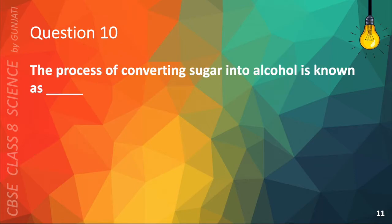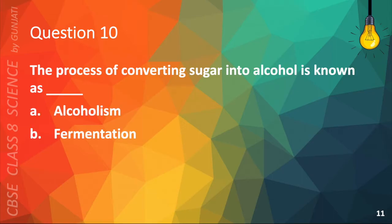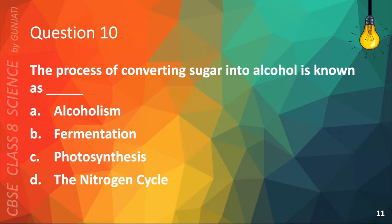Question 10. The process of converting sugar into alcohol is known as A. Alcoholism, B. Fermentation, C. Photosynthesis, or D. The nitrogen cycle. The correct answer is B. Fermentation.